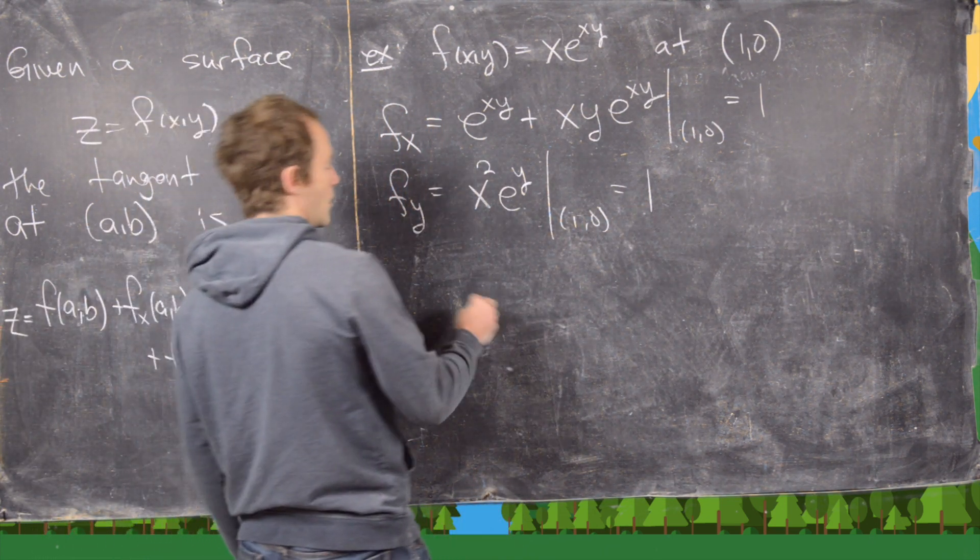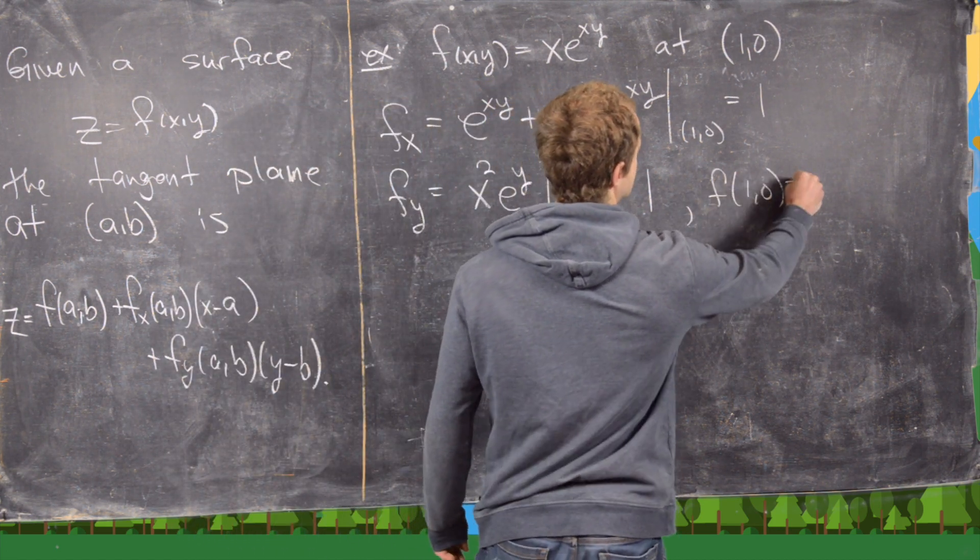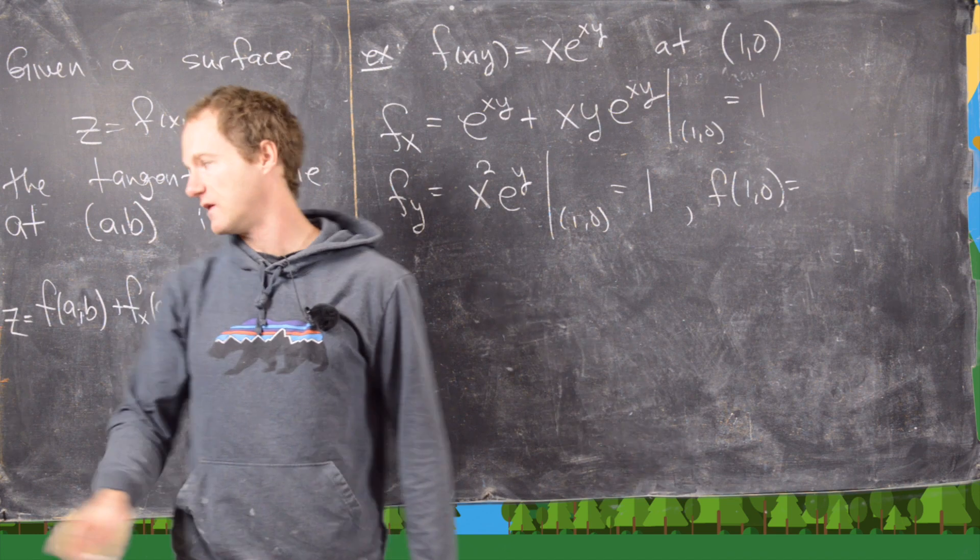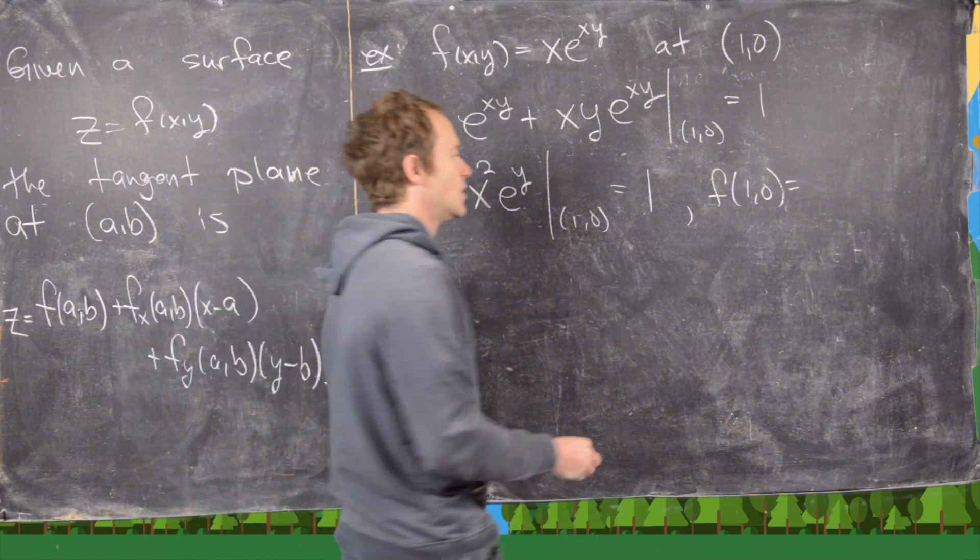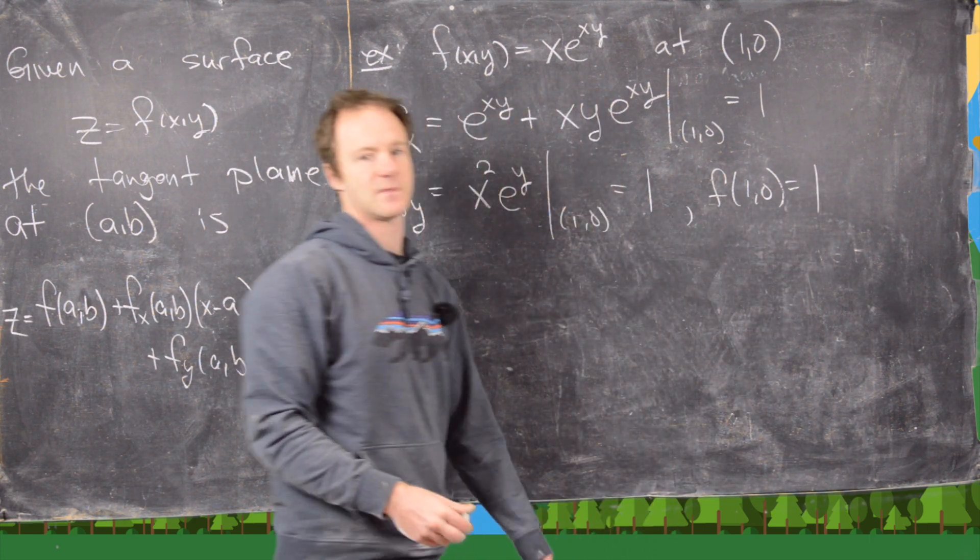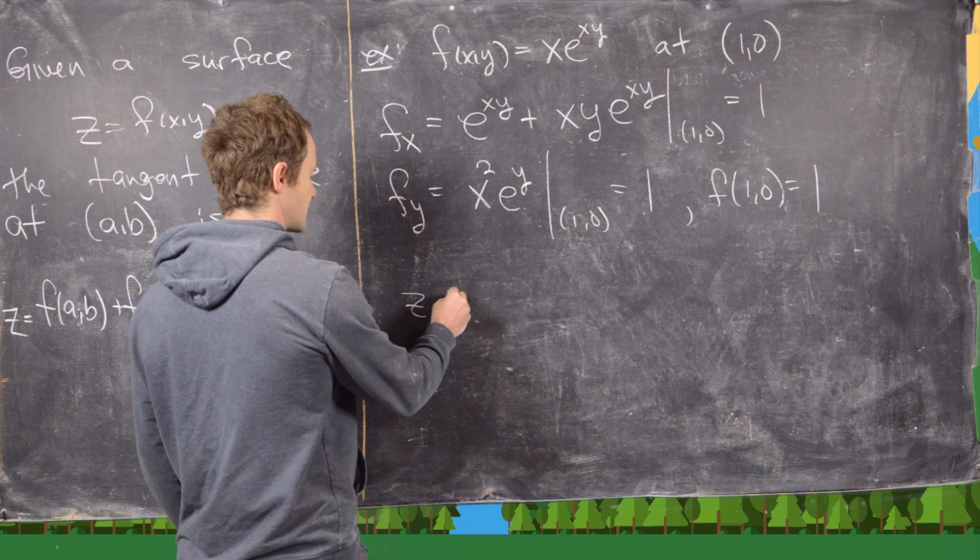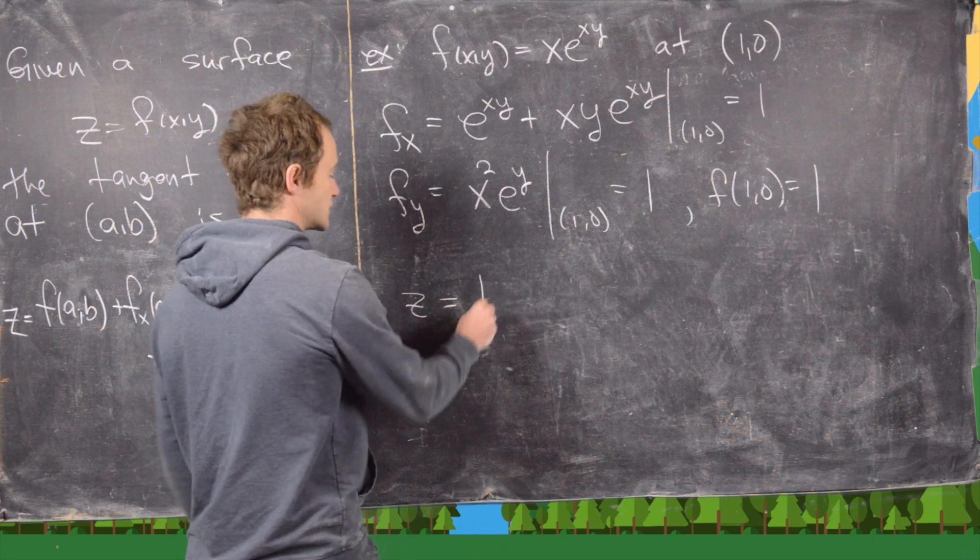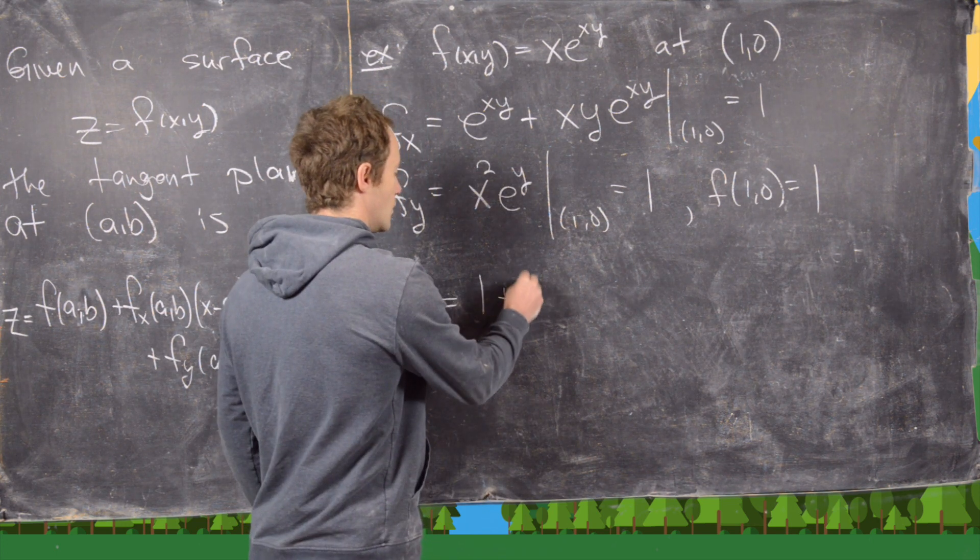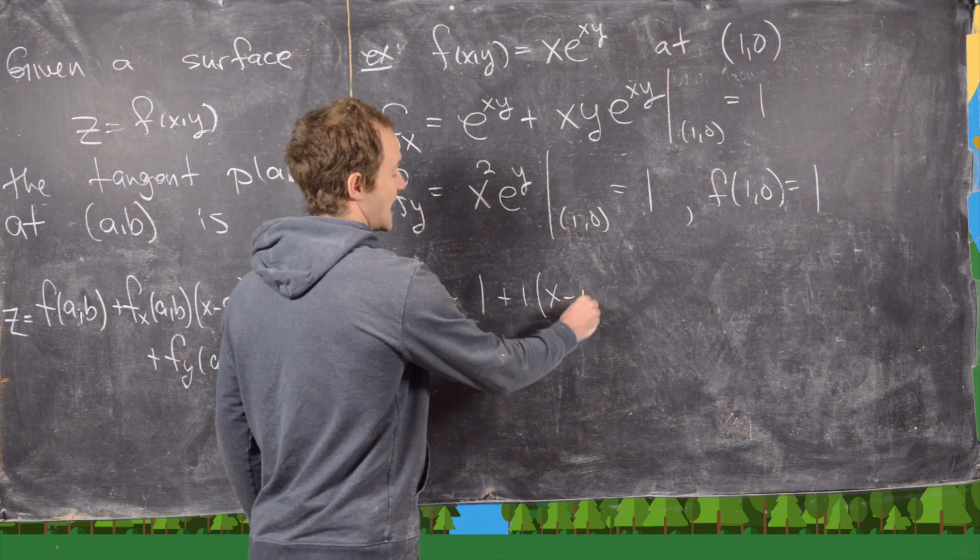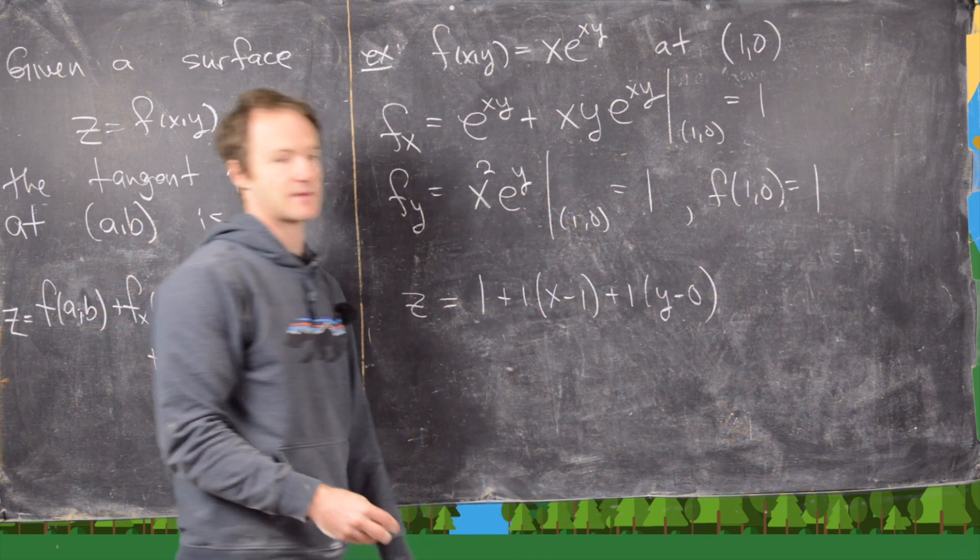Now one more thing that we need is f of (1,0). In other words, that point, that's this part of the equation. If we plug (1,0) into this equation, we get 1 again. So we've got lots of 1s. And now notice our equation of our tangent plane is going to be given by z equals 1, that's this thing right here, plus 1 times (x minus 1) plus 1 times (y minus 0).